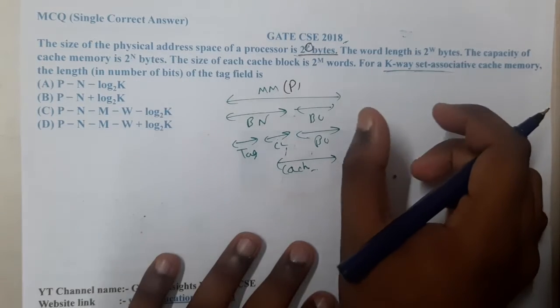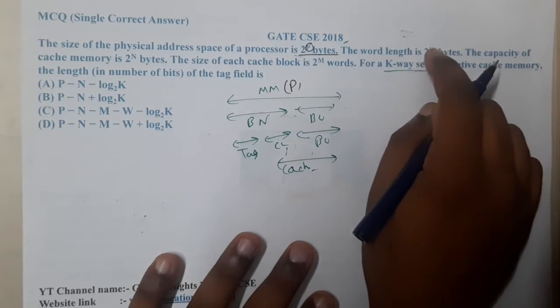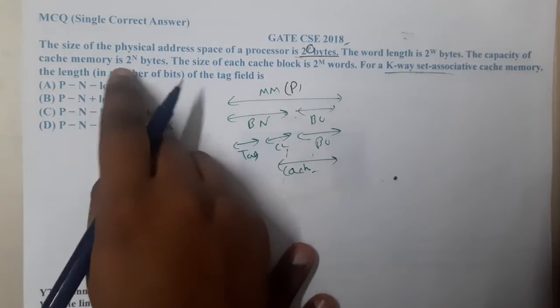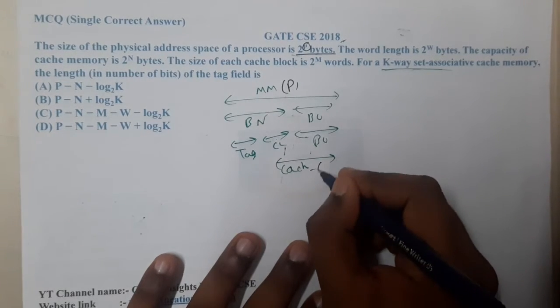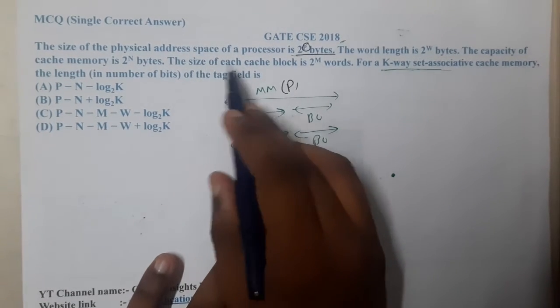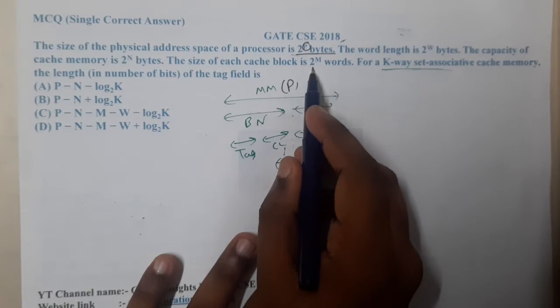They also gave the word length as W, so 2 power W. The capacity of the cache is N, so the total capacity of the cache is N. The size of each cache block is M.